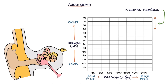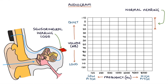In patients with sensorineural hearing loss, both the air and bone conduction readings will be more than 20 decibels, plotted below the 20 decibel line on the chart. This may affect only one side, one side more than the other, or both sides equally.